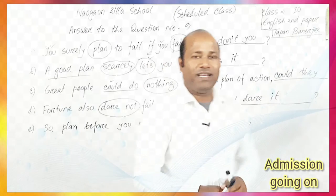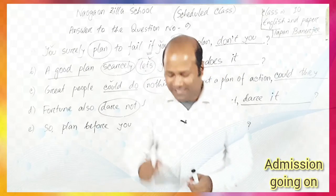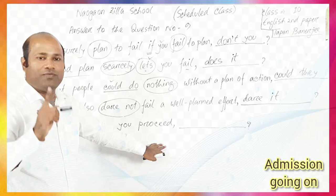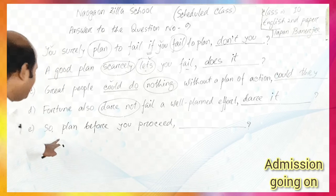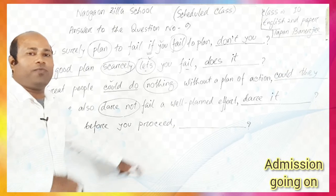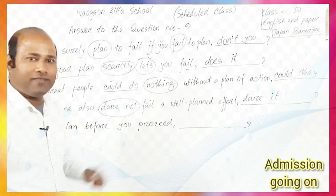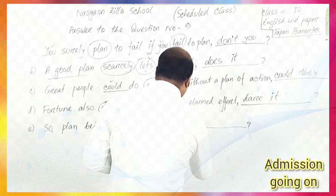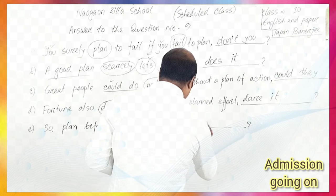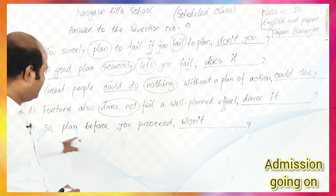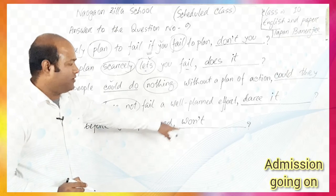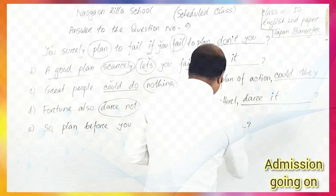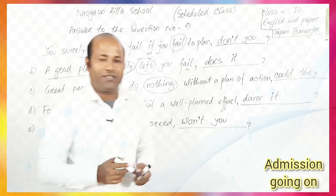Last one: 'Plan before you proceed.' First technique — which sentence type is it? Exactly — it is an imperative sentence. Because it starts with a verb 'plan', it is imperative. For imperative sentences, the tag is 'won't you'. Won't means will not. The subject of an imperative sentence is always 'you', so the tag becomes 'won't you'.